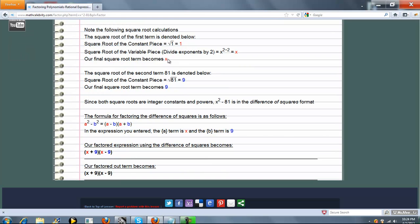Well, a is just x in this case, and b is just 9. So we plug in our numbers and we get x plus 9 times x minus 9. Pretty simple.